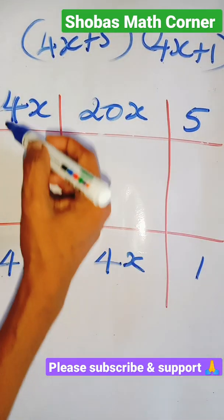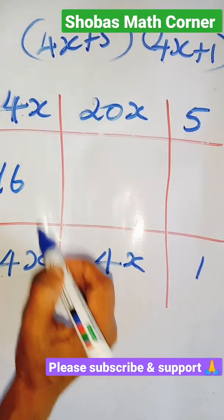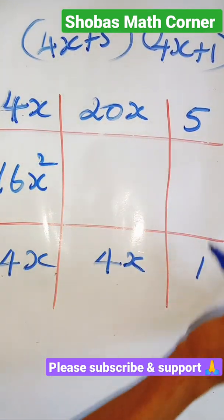Then multiply these corners also. 4 into 4, it is 16. x into x is x square. 1 into 5 is 5.